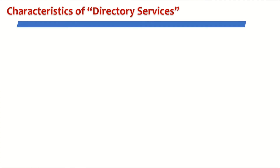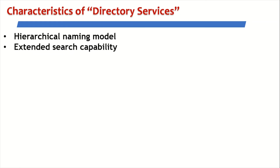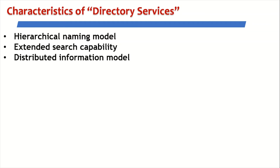Let us look at the characteristics of a typical directory service. All directory services are hierarchical in their naming model, and they have extended search capabilities. The information is distributed — they have a distributed information model, it's not done on a single computer. And of course, they have shared network access.